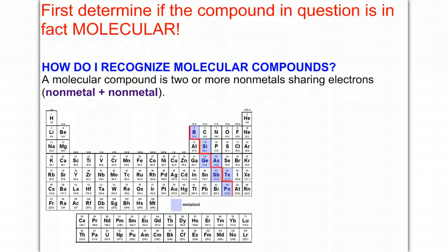So the first thing you have to do is identify, is your compound molecular? And remember, to do this, a covalent compound, or a molecule, is a non-metal plus another non-metal.